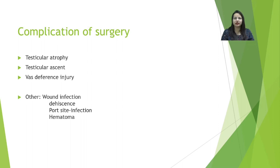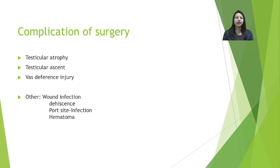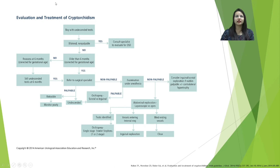Like any surgery, orchiopexy has potential complications. Early complications include wound infection, wound dehiscence, port site infection, and hematoma formation. Later complications include testicular atrophy, which is the most concerning, seen in 0 to 40% of cases and more common with high abdominal testes. Testicular ascent is seen in around 10% of cases, attributed to fibrous tissue formation around the spermatic cord preventing proportional growth. Vas deferens injury is another possible complication.